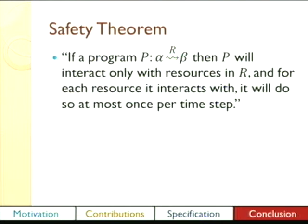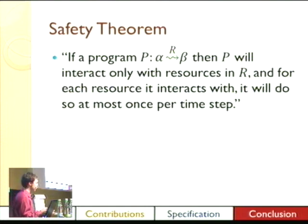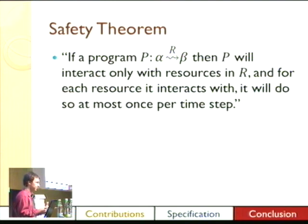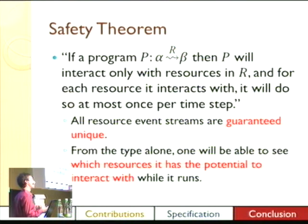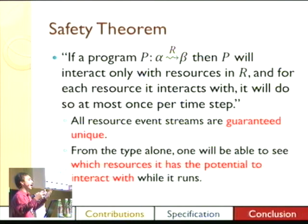With these semantics, we can prove the safety theorem, which is important to our previous work. If a program P has type alpha to beta with a resource set R, then P will interact only with the resources in R, and for each resource it interacts with, it does so at most once per time step. This means resource event streams are guaranteed unique — exactly what we wanted. We can also look at the type of a signal function and know exactly what it interacts with, so we can compose a signal function that touches keyboard with one that touches speaker without fear of any problems.